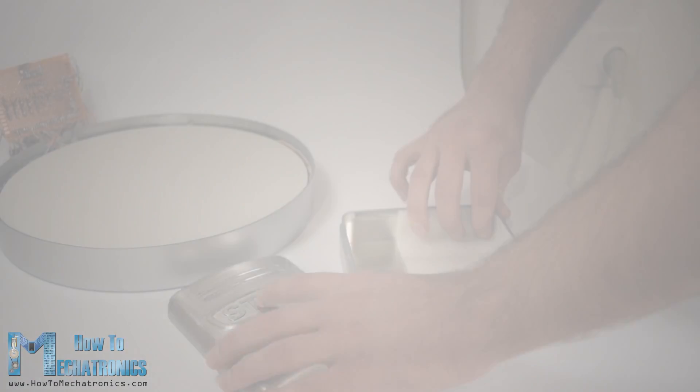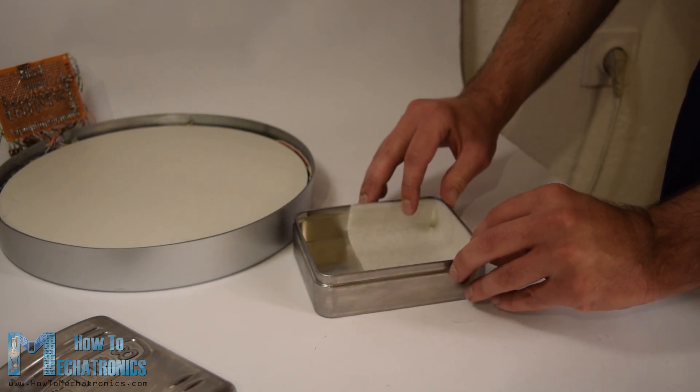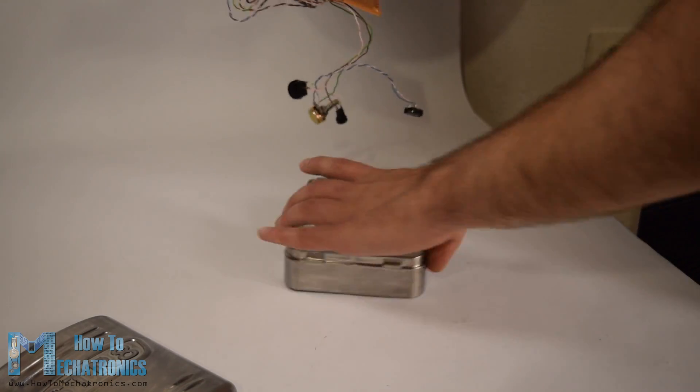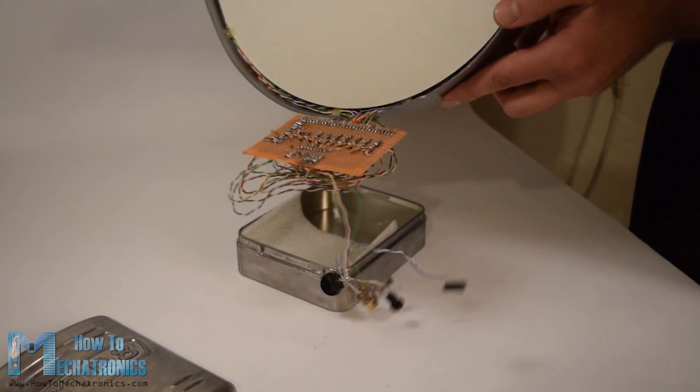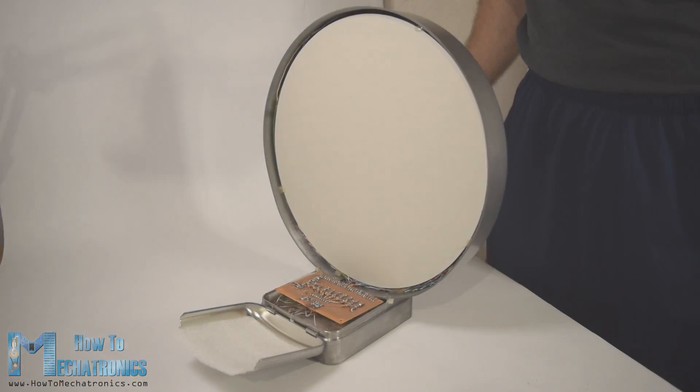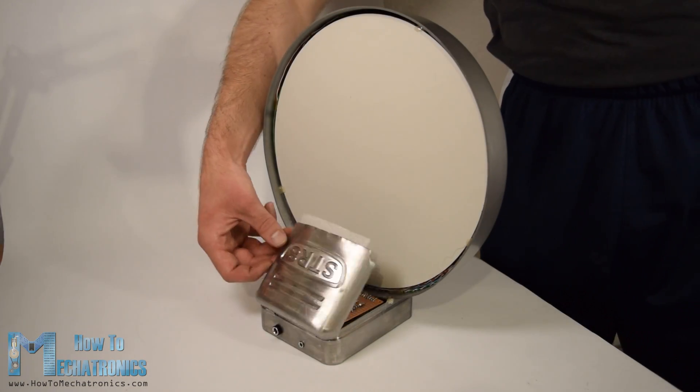What's left now is to make a stand for the infinity mirror. For that purpose I used a metallic box from a perfume which was exactly the same size as I needed. So I secured the infinity mirror to the box using a glue gun.